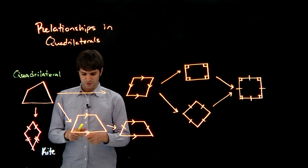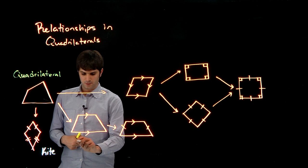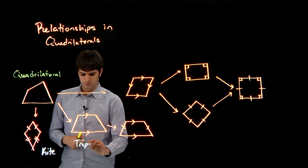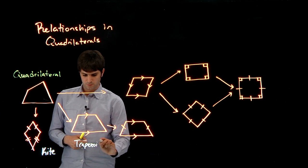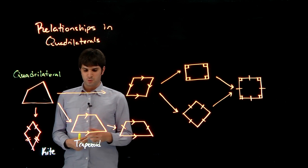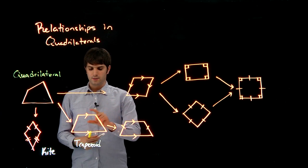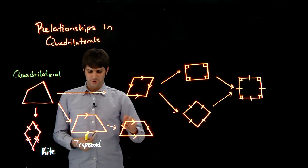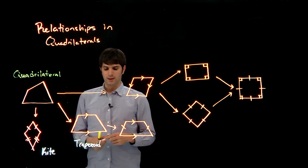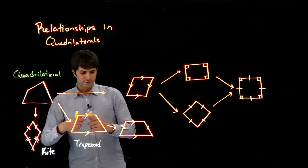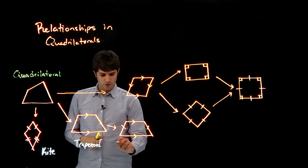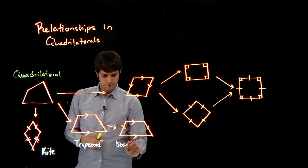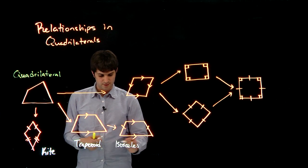We also have trapezoids. So trapezoid is when we have only one set of opposite sides, exactly one set of opposite sides that are parallel. We also have a special case of trapezoids, which are isosceles, which is an isosceles trapezoid.